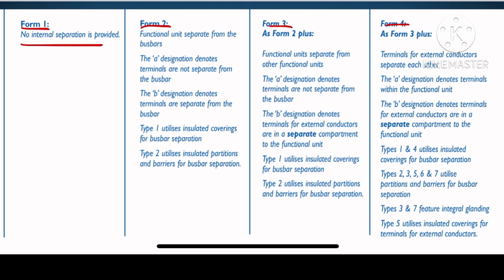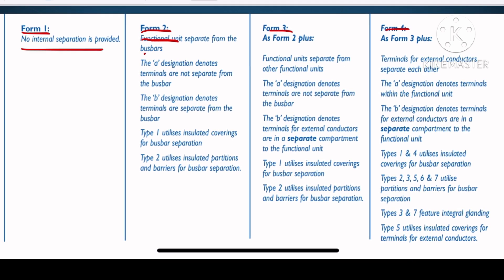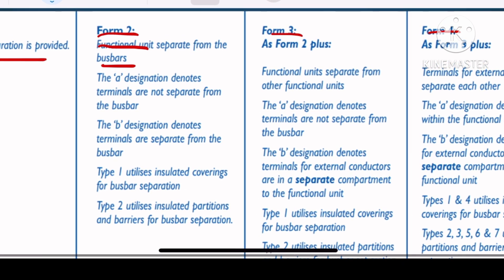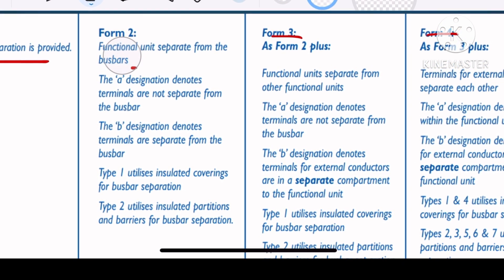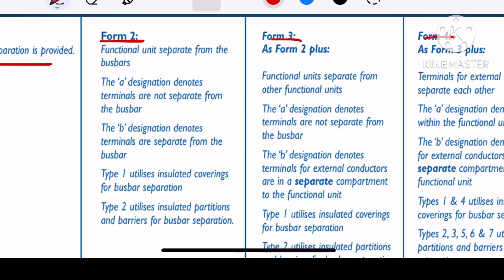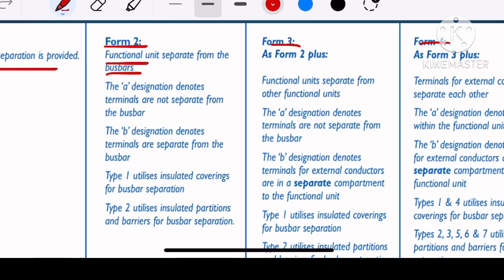For form 1, there is no separation at all — between bus bar and functional unit, functional unit to functional unit, and terminals to terminals, there is no separation. In form 2, there is only one separation: the separation between the functional unit and the bus bar.